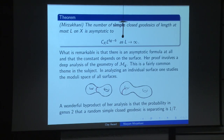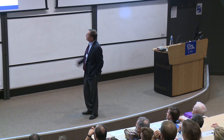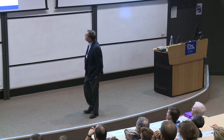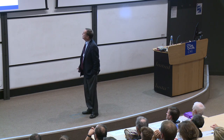What is remarkable is that there's an asymptotic formula at all, and that the constant depends on the surface. The proof involves studying the geometry of the moduli space. To get information about a particular surface, you look at the set of all surfaces of this fixed topological type. This is a fairly common theme: if you're analyzing an individual surface, one often studies the space of all surfaces.